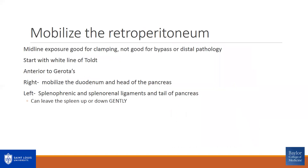After making my incision, I like to mobilize the retroperitoneum. The midline exposure of the aorta is excellent for clamping, but it's not as good for doing a bypass, especially for distal pathologies. To expose a distal part of the renal artery, I want to expose the entire kidney all the way out to the parenchyma — mobilizing the retroperitoneum is key. Start with the white line of Toldt and try to stay anterior to Gerota's fascia. On the right, do a Kocher maneuver and mobilize the duodenum and head of the pancreas. On the left, mobilize the splenophrenic and splenorenal ligaments and tail of the pancreas and rotate everything over. I've always found it easier to lift the spleen up and get all of the pancreas out of the way.